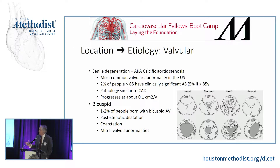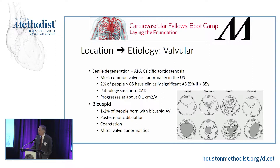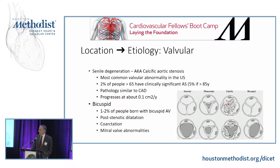The location of the stenosis gives you a very good handle on what is causing it. In the U.S., our major cause is senile or calcific aortic stenosis, where you have a large amount of calcium deposited in the leaflets and commissures. The pathology is very similar to atherosclerotic disease — beginning with endothelial damage, inflammation, white cell infiltration, lipid deposition, and finally calcium deposition. This progresses at about 0.1 centimeters squared per year once started.